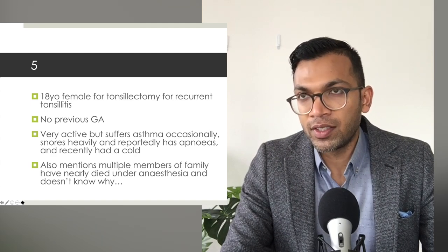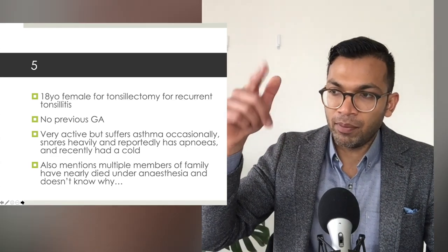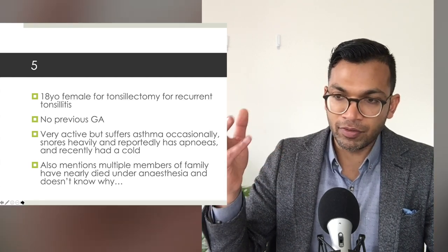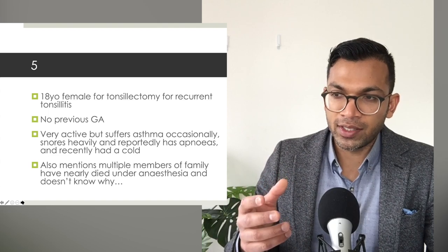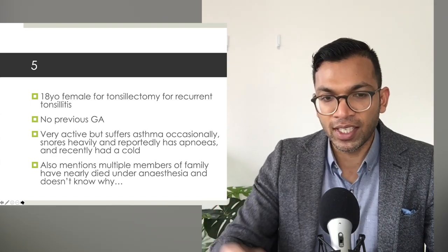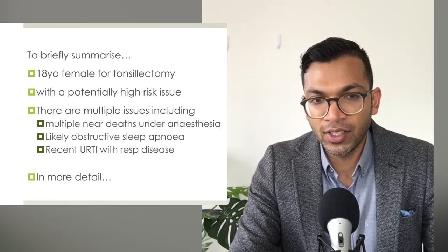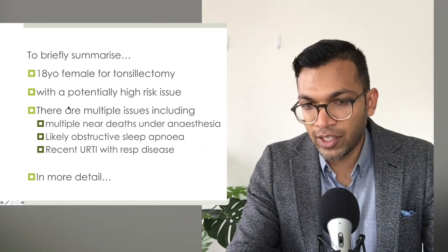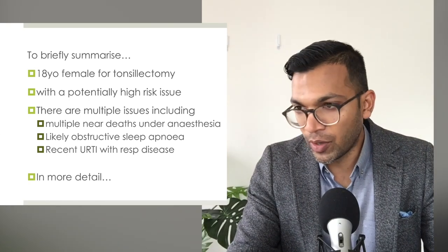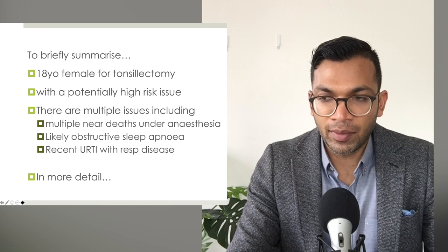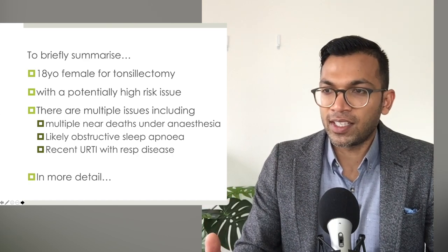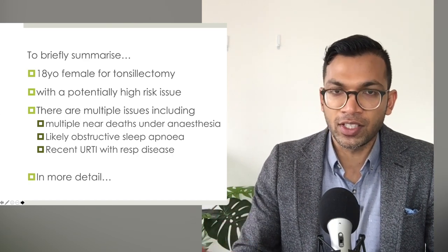Hospitals often have a risk matrix of OSA severity - mild, moderate, severe - on one axis, and procedural risk on the other. Tonsillectomy or airway surgery, while generally moderate-to-low risk, carries high risk for OSA complications. My summary: 18-year-old female for tonsillectomy with potentially high-risk issues including multiple family deaths under anaesthesia, possible OSA, and recent respiratory illness. I'd need to make different management decisions for each of those. By highlighting these important issues you get to the crux of the matter.